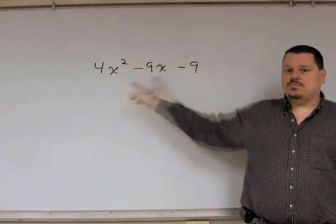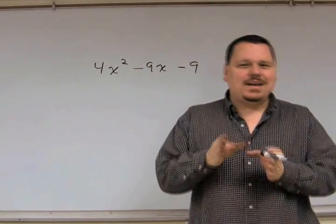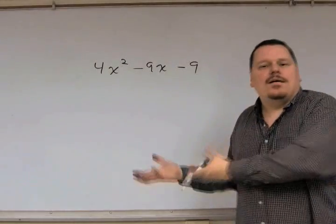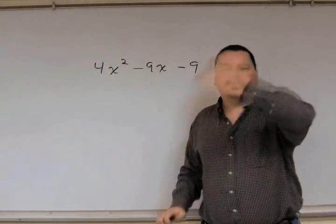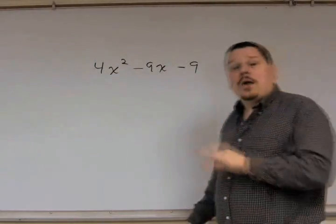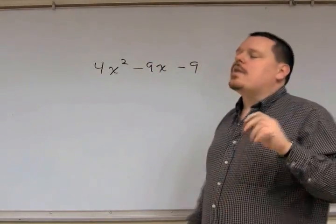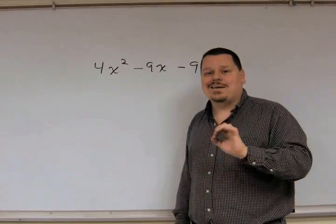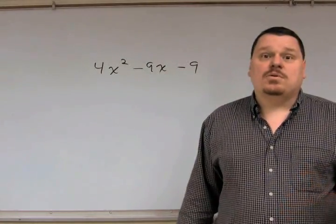There are two ways of doing this: the short way, which is clever and requires anticipating the answer, and then the step-by-step regimented method. I'm going to show the regimented method first and then the easy method. The easy method connects with some students; other students have problems with it. If you have problems with it, abandon it — don't even try to figure it out.